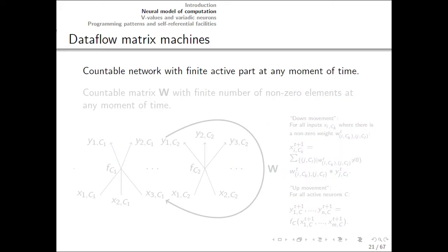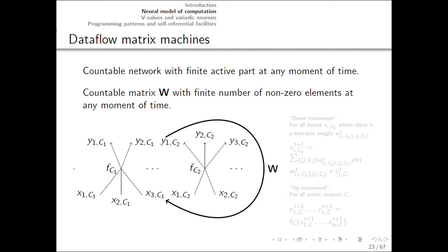So, a dataflow matrix machine will be a continuous network with finite active part at a given moment of time. Speaking in terms of matrices, it will be a countable sized matrix. But at any given moment of time, only a finite number of its elements will be non-zero. Instead of streams of numbers, various linear streams will flow along the wires. And neurons can have multiple inputs and outputs, so that we can implement a neuron performing multiplication, for example.